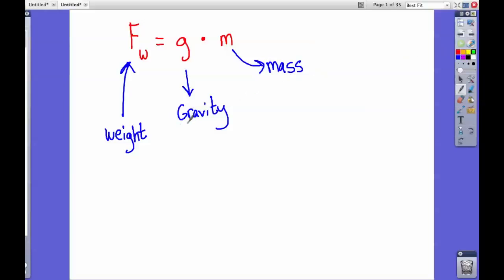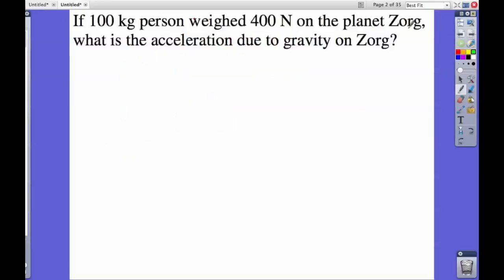Today our main topic is gravity. We're going to look at this question here. If a 100-kilogram person weighed 400 newtons on the planet Zorg, what is the acceleration due to gravity on Zorg?